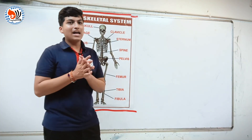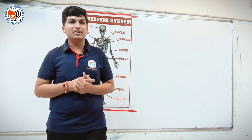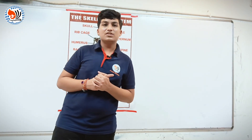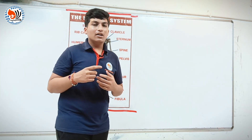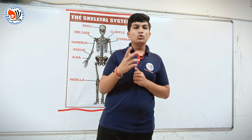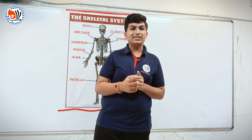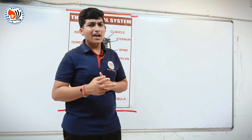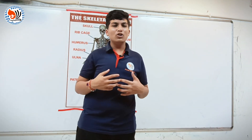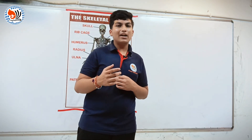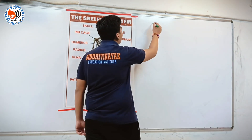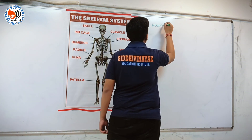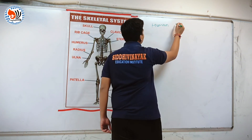Welcome to Siddhi Vinayak Education Institute. Hi guys, I am Pallash Agural from 11th at Siddhi Vinayak NEET. Today we will study about the human skeleton. The human skeleton has two types. First is axial skeleton and second is appendicular skeleton. As we all know, in humans there are 206 bones. Let's write: Human Skeleton.